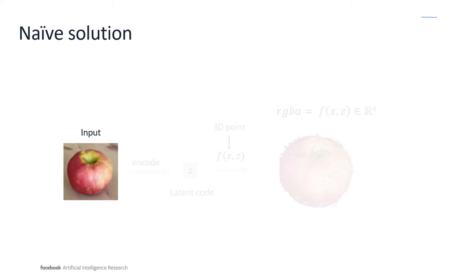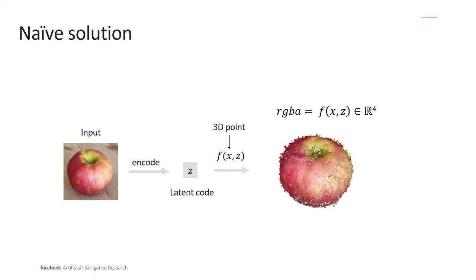A naive solution for our task would take an image of an object and encode it as a global encoding. Consequently, multiple images of the same object would be enforced to have the same encoding. A shape decoder would then take the encoding and return the opacity and color of the object at a given 3D location X.